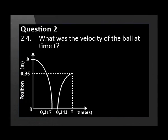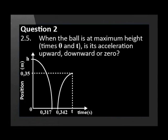What was the velocity of the ball at time t? When the ball is at maximum height, time 0 and t, is its acceleration upward, downward or 0?